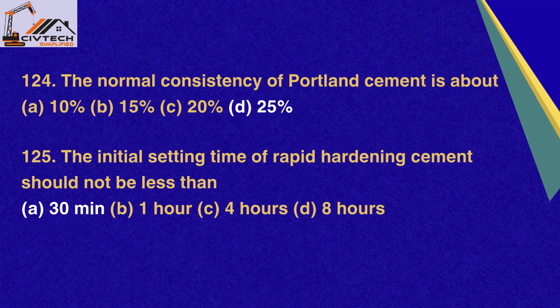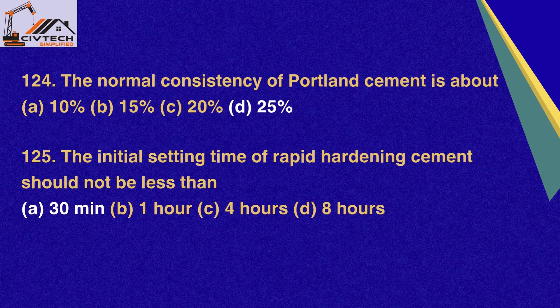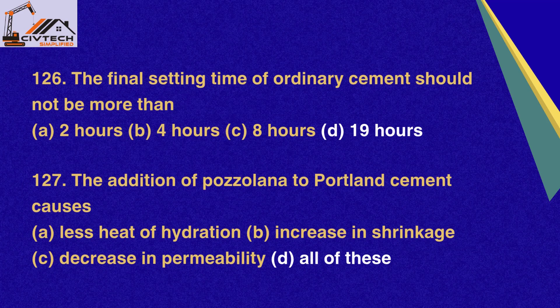Question 124. The normal consistency of Portland cement is about: A. 10%, B. 15%, C. 20%, D. 25%. Correct option D: 25%. Question 125. The initial setting time of rapid hardening cement should not be less than: A. 30 minutes, B. 1 hour, C. 4 hours, D. 8 hours. Correct option A: 30 minutes. Question 126. The final setting time of ordinary cement should not be more than: A. 2 hours, B. 4 hours, C. 8 hours, D. 19 hours. Correct option D: 19 hours.